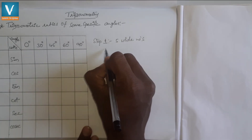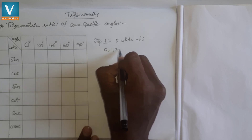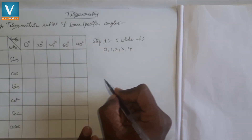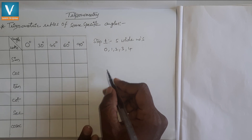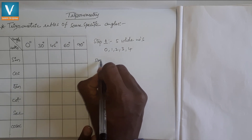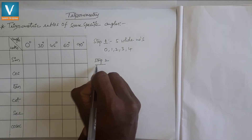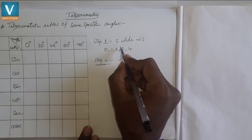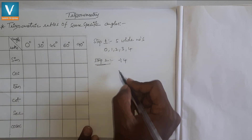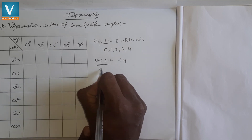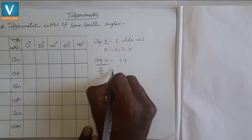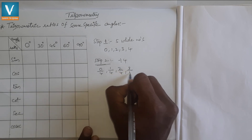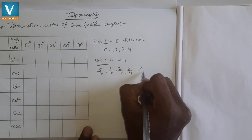The first five whole numbers are 0, 1, 2, 3, and 4. In step 2, I am dividing these whole numbers by 4. So we get 0/4, 1/4, 2/4, 3/4, and 4/4.